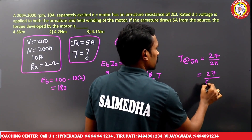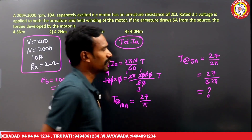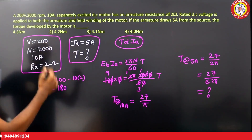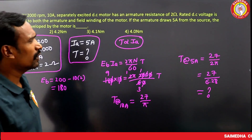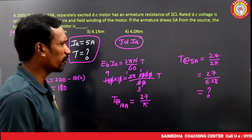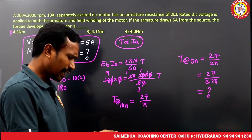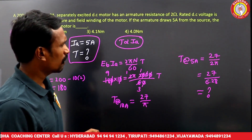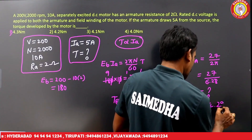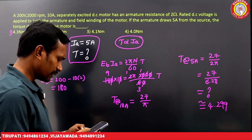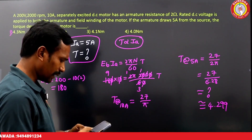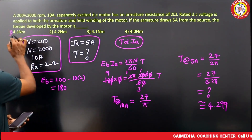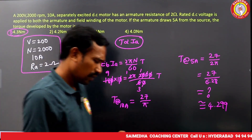Calculating 27/(2π) = 27/6.28 ≈ 4.3 Newton-meters. The answer is approximately 4.3 Newton-meters. These calculations require patience and care, especially under exam conditions.